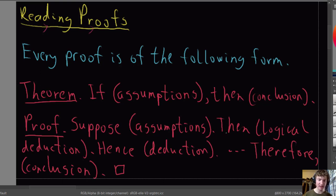So that could be then a deduction, hence another deduction, then, maybe you have a few more deductions. And at the end you deduce the conclusion that you were trying to show. So this is what basically all proofs are going to look like.